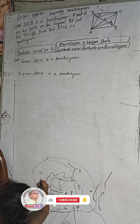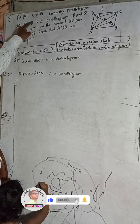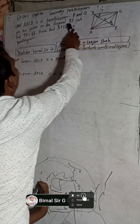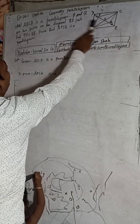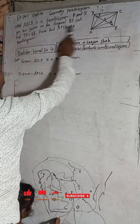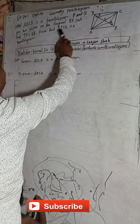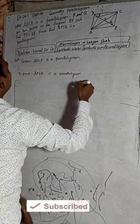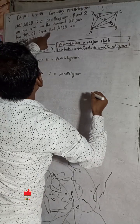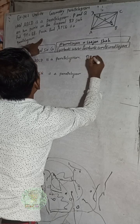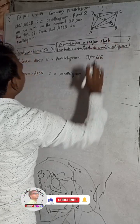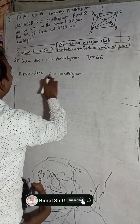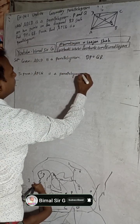Question 10A: ABCD is a parallelogram. P and Q are two points on the diagonal BD such that DP is equal to QB. Prove that APCQ is a parallelogram.